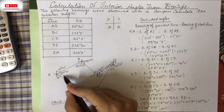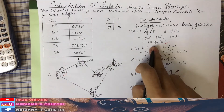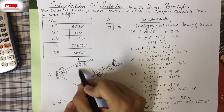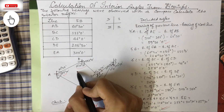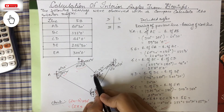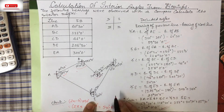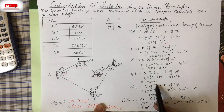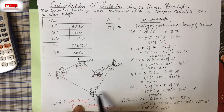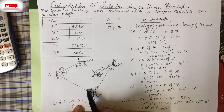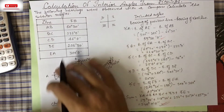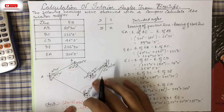We can verify that the individual angles match: angle A = 59°30', angle B = 118°30', angle C = 256°0', angle D = 20°30', angle E = 85°30'. These are identical to what we obtained from the graphical method, confirming both approaches give the same interior angles from the given bearings.